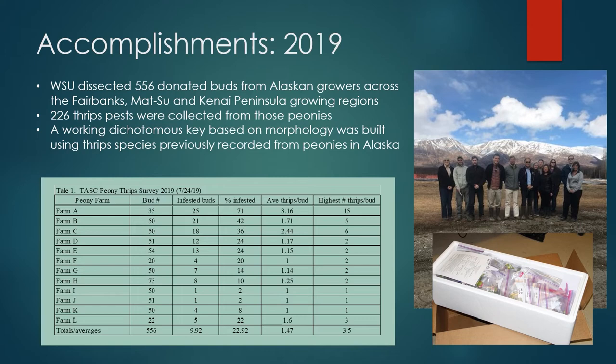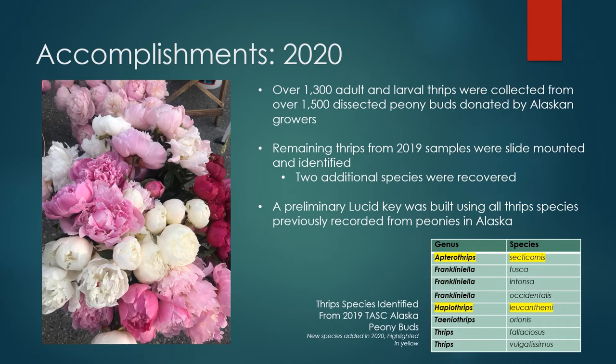2020 introduced a number of difficulties into our research plans. However, our team still managed to pick, ship, and dissect over 1,500 peony buds — almost three times as many as in 2019. From these buds, we collected over 1,300 adult and larval thrips, more than five times the number collected in the previous year. The remaining specimens from the 2019 samples were identified and resulted in eight total thrips species being recovered from peony buds.